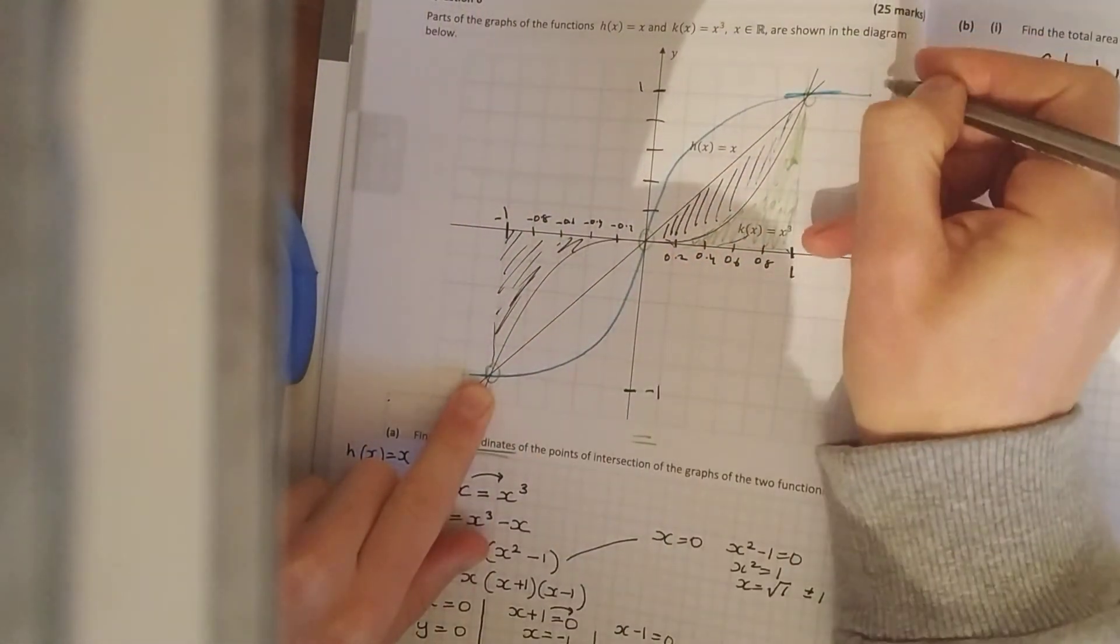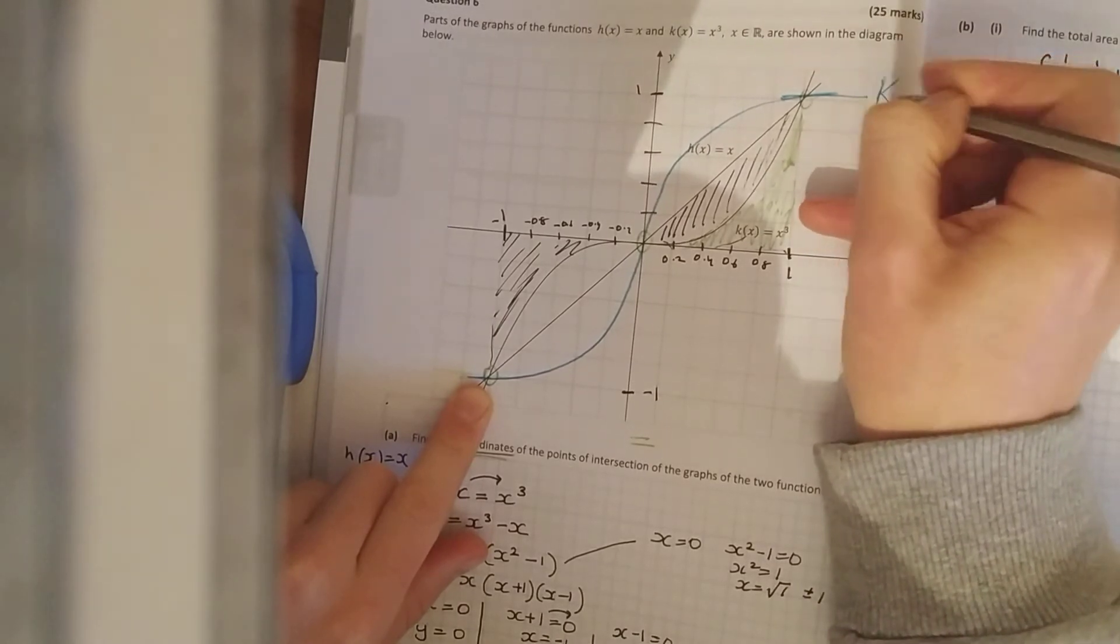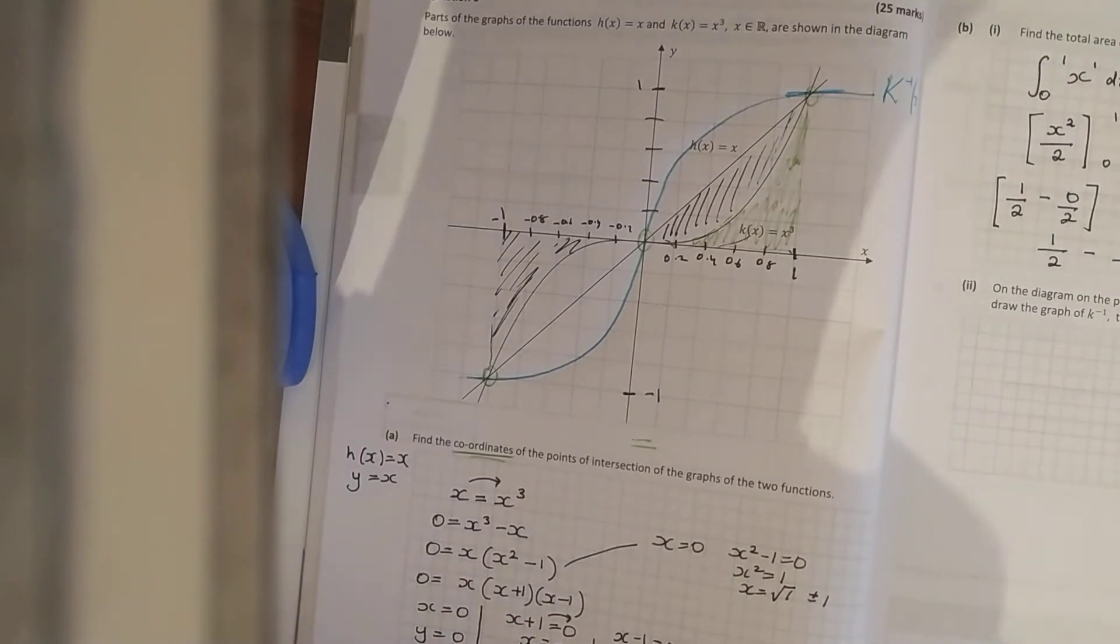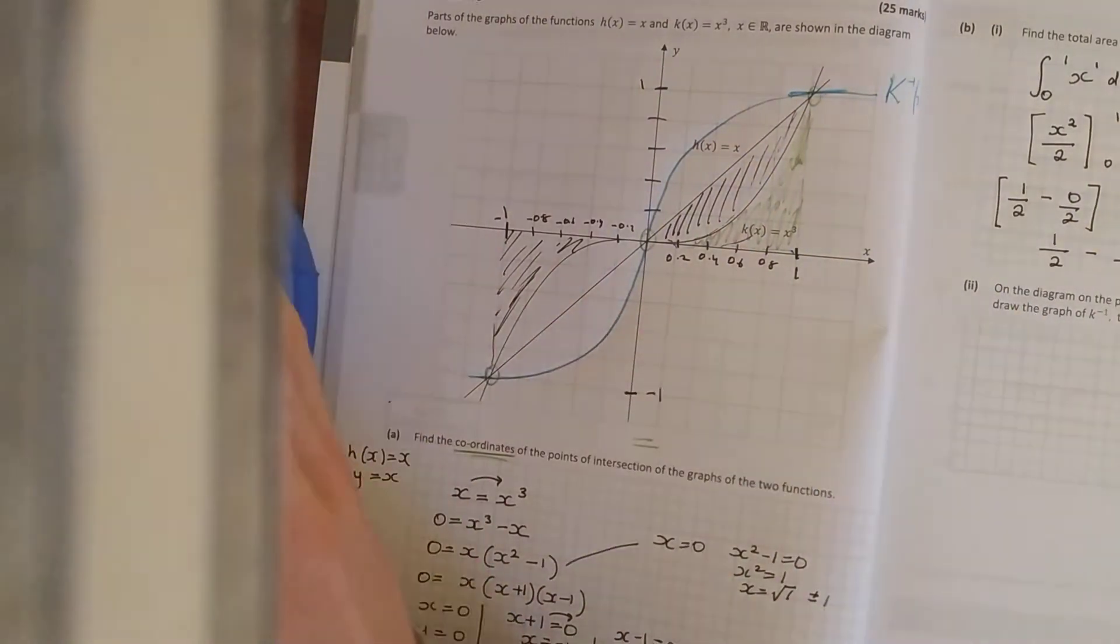And no examiner's going to be looking too closely at that. You know, there's your k⁻¹(x). If you want it to be more precise, you just need to know how to find the inverse.